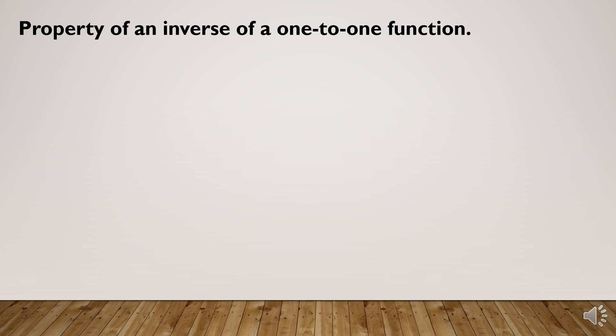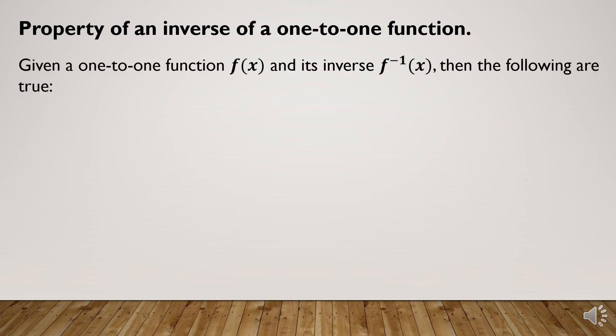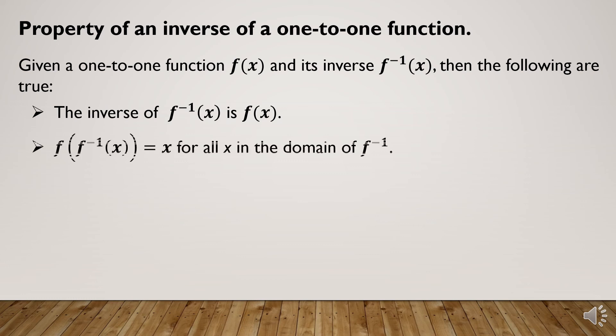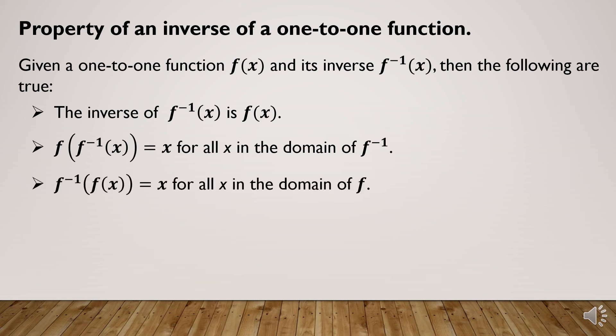Properties of the inverse of a one-to-one function: given a one-to-one function f(x) and its inverse, the following are true. The inverse of an inverse function is a function. The composition of a function and its inverse equals x for all x in the domain of the inverse. The composition of the inverse and the given function equals x for all x in the domain of the given function.